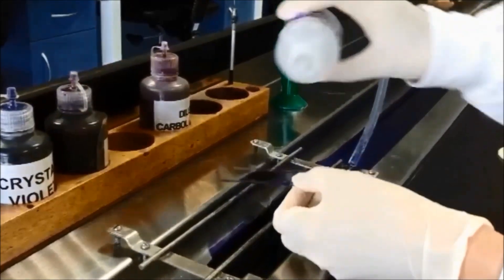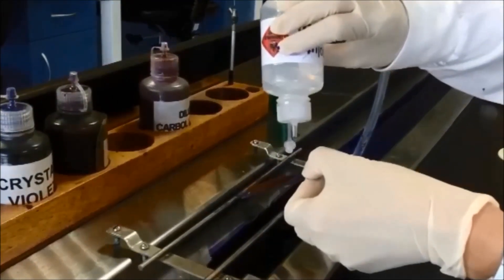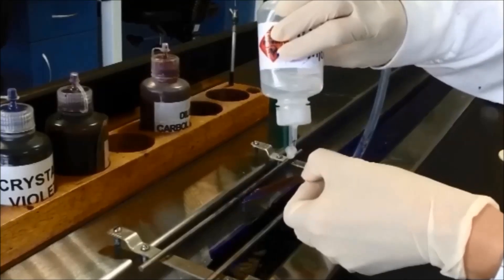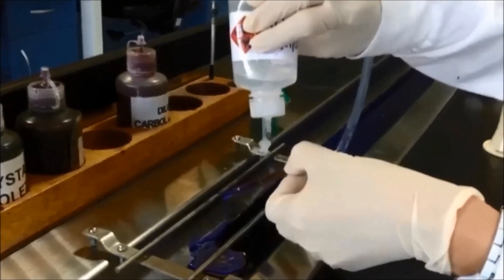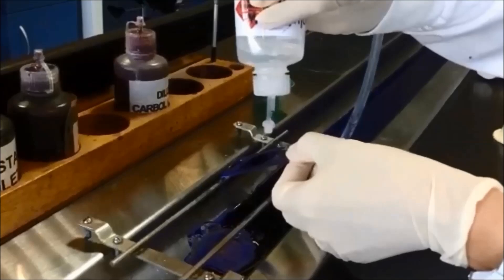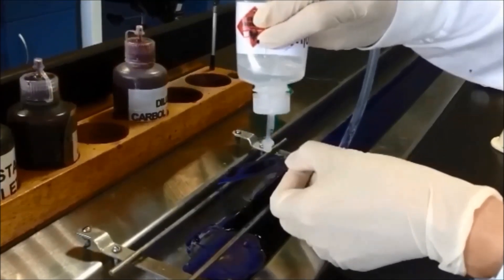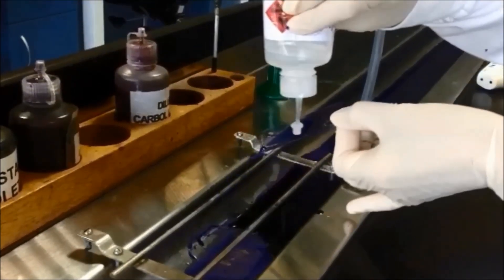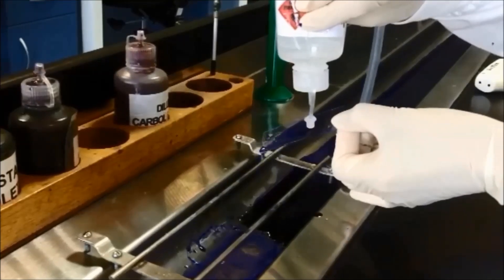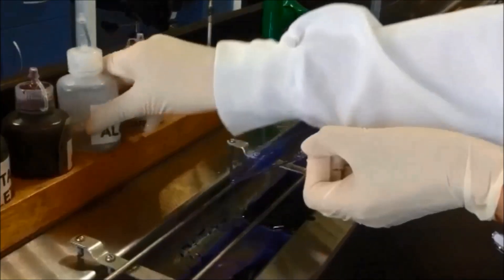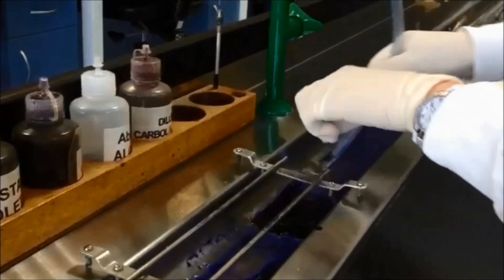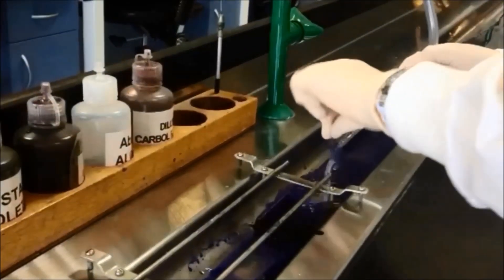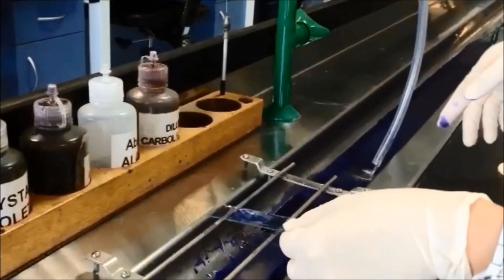Holding the slide at an angle, decolorize with alcohol, adding the alcohol drop by drop until no more color comes out of the film. It is important not to decolorize for too long. With thin films, decolourization is usually complete within 5 seconds. Thick films may take longer. Wash with water.